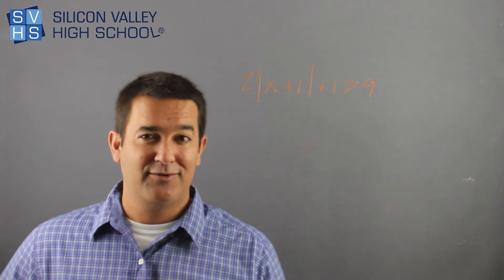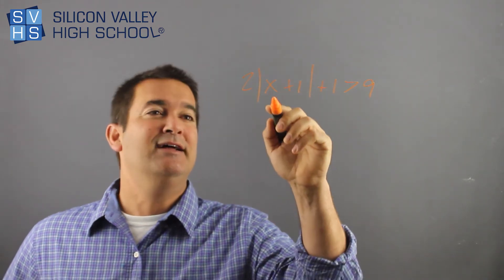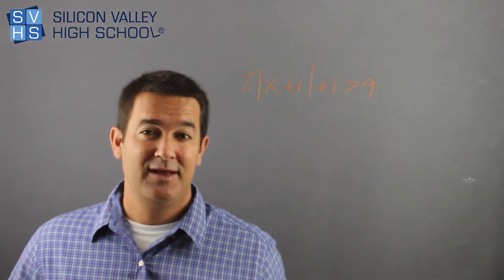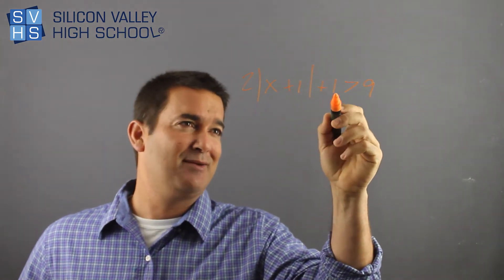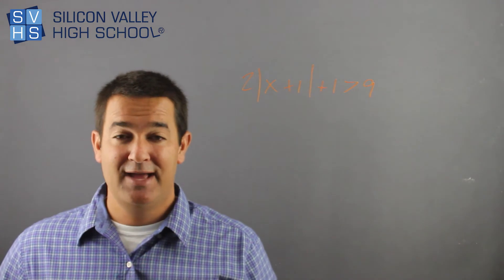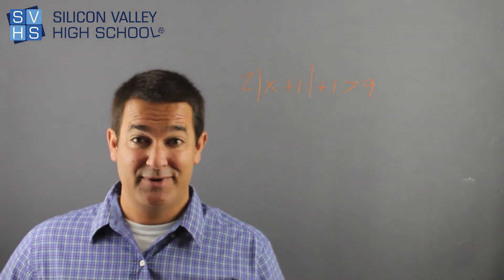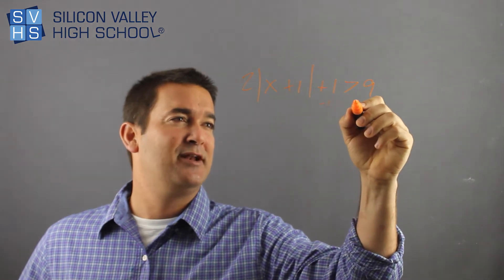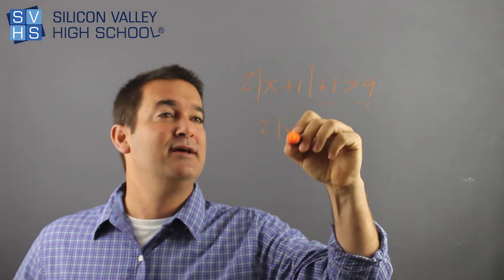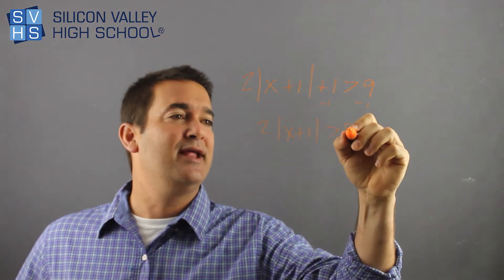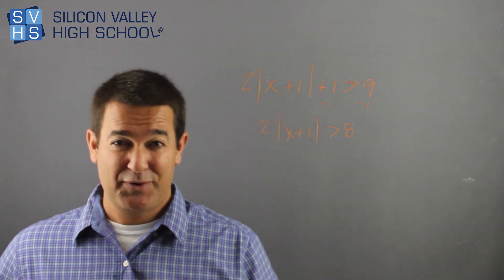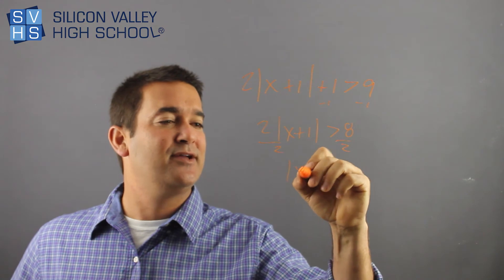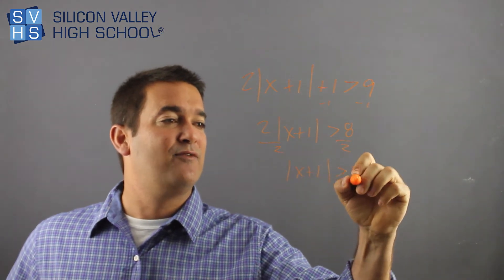You can't do the two arrow thing until the absolute value is totally isolated on the left side. Right? And so we have all this drama. We got like a plus 1 and this annoying 2. I can't do my two arrows until I get rid of those suckers. So like normal algebra, let's get this 1 out of here. Minus 1, minus 1. So you have 2 times absolute value of x plus 1 greater than 8. I still have to deal with the 2. That's pretty annoying. Divide both sides by 2. You have absolute value of x plus 1 is greater than 4.